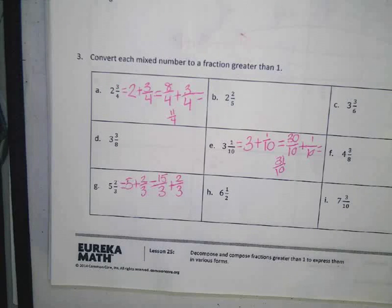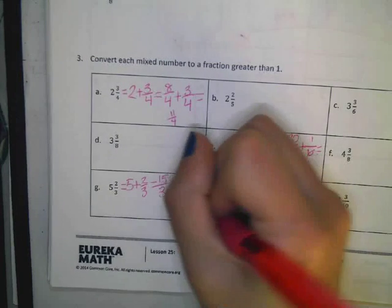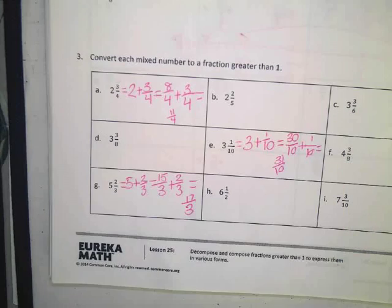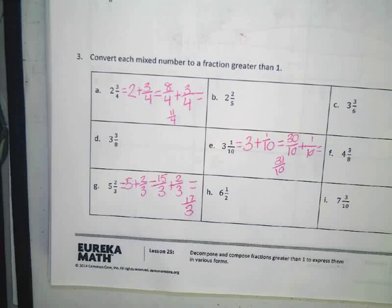Or you could count. You could say three, six, nine, twelve, fifteen. All works the same. So fifteen-thirds plus two-thirds is seventeen-thirds. I'm glad you feel that way.